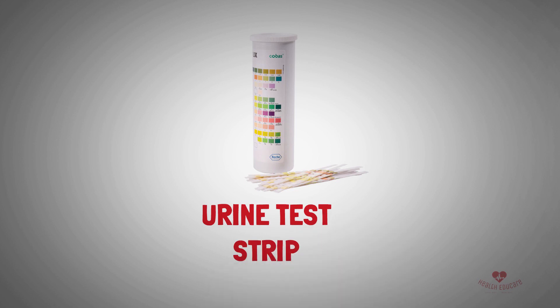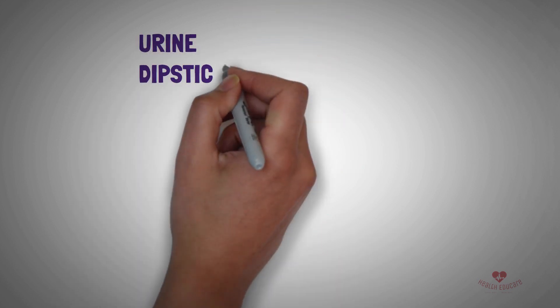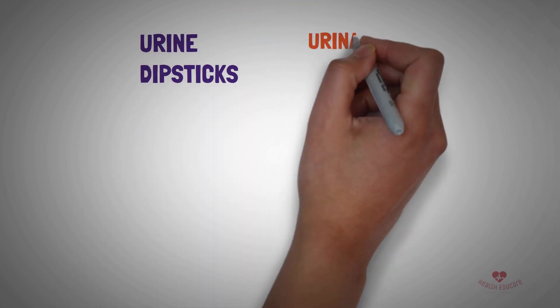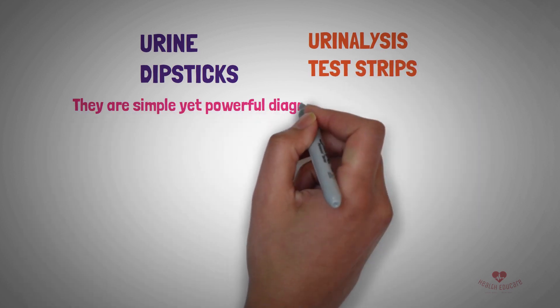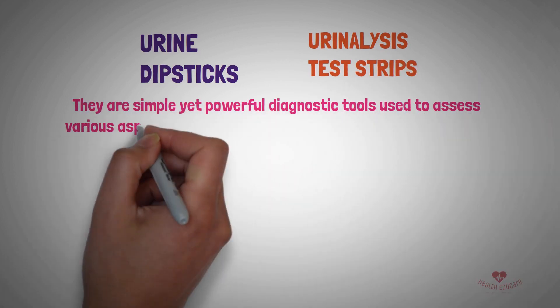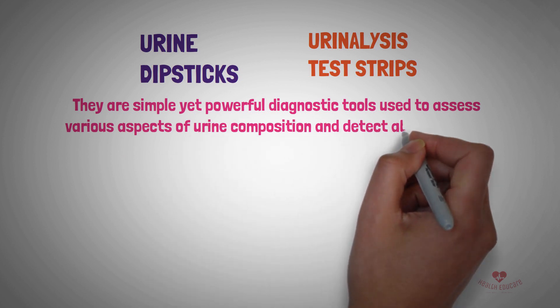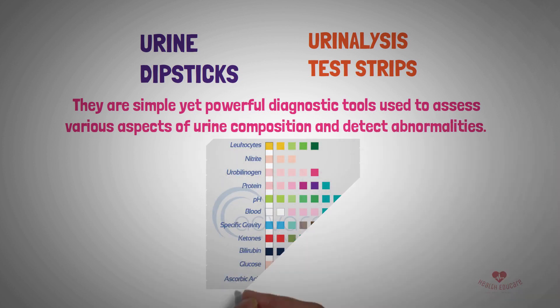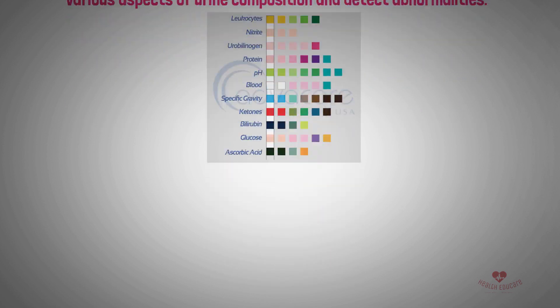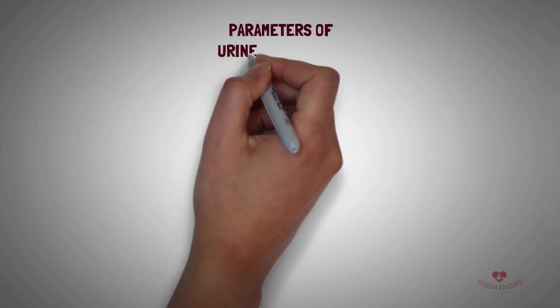What are urine test strips? Urine test strips, also known as urine dipsticks or urinalysis test strips, are simple yet powerful diagnostic tools used to assess various aspects of urine composition and detect abnormalities. These strips typically contain several chemical pads that change color in response to specific substances present in the urine.